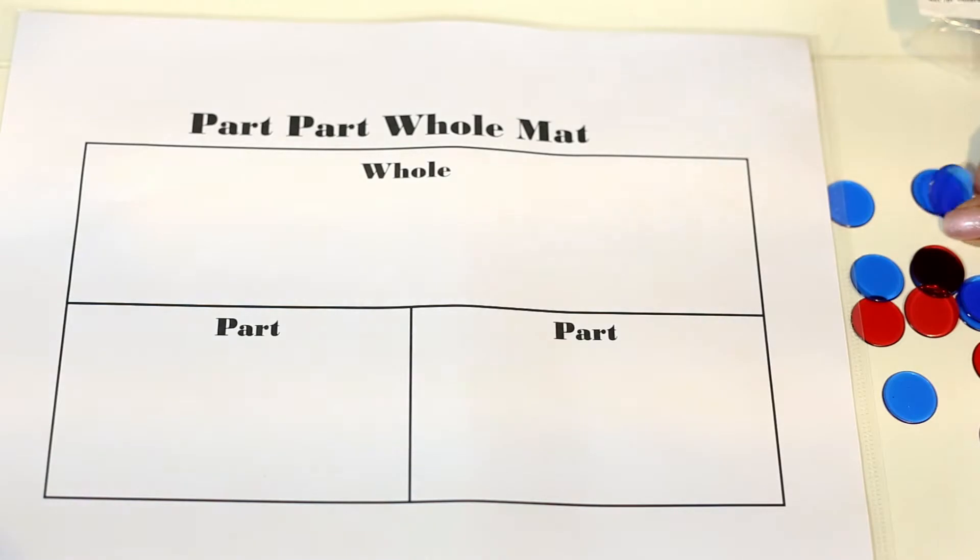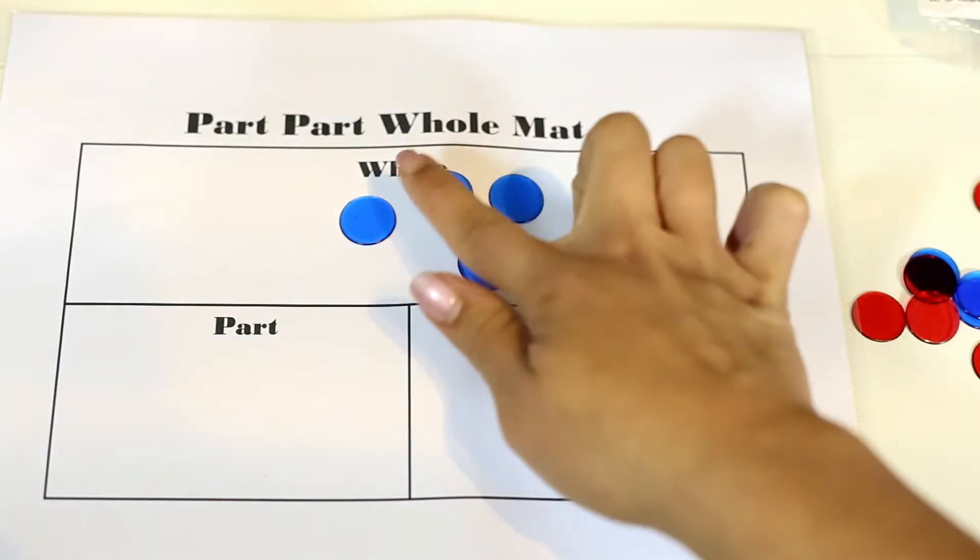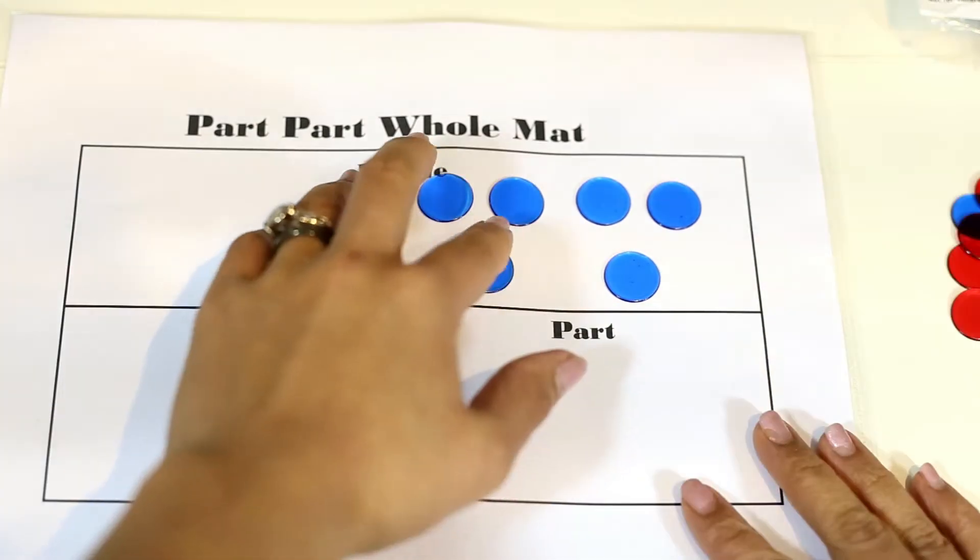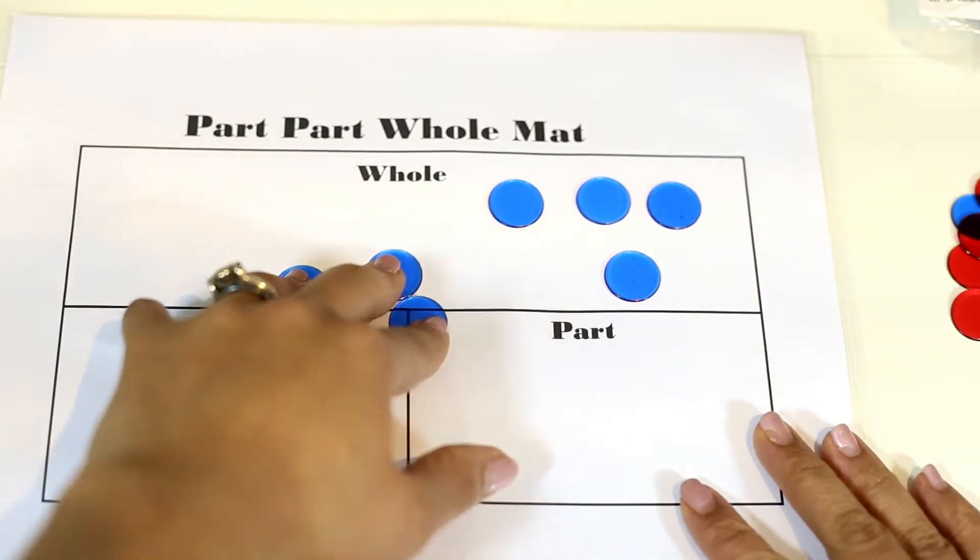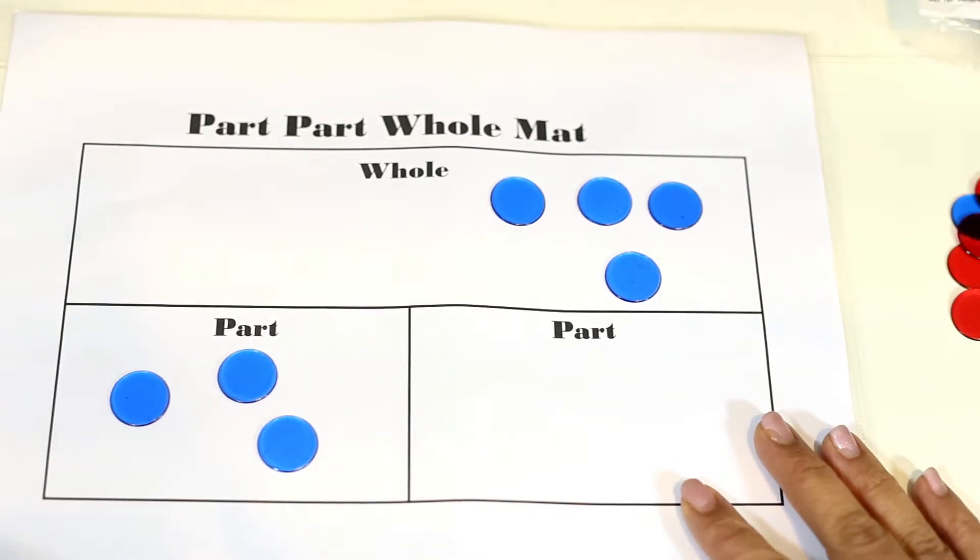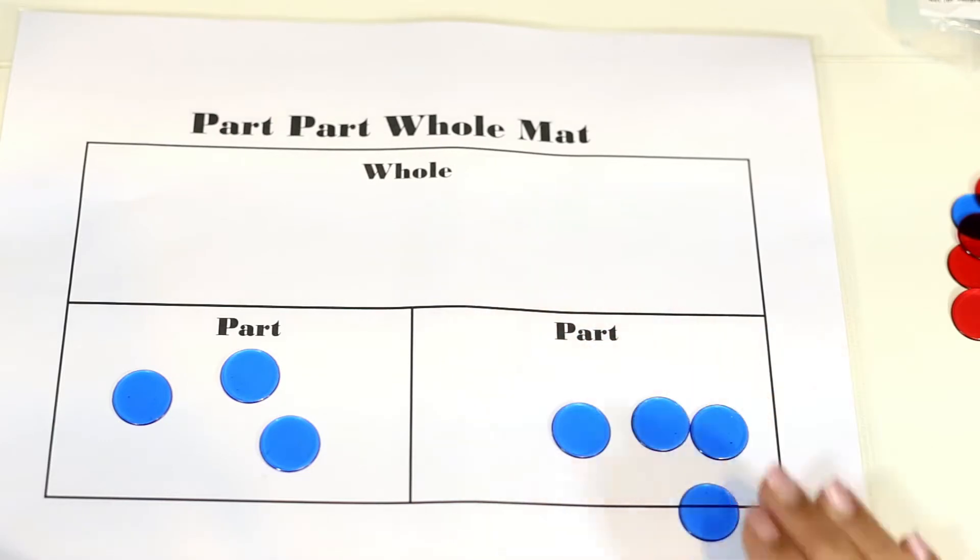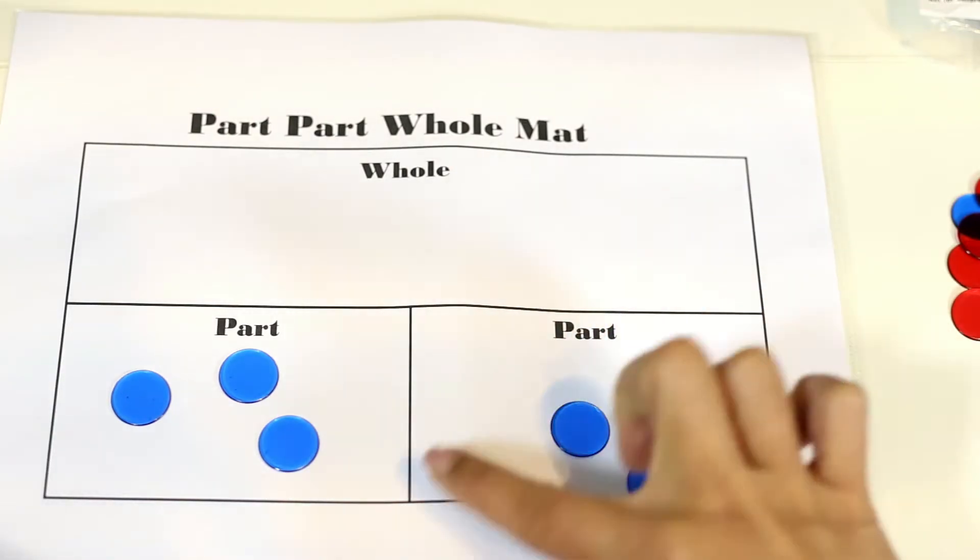So we would start with seven. There are seven. That's the whole that we know. We said that three of them were red. How many are purple? The rest here are purple. That is the missing part.